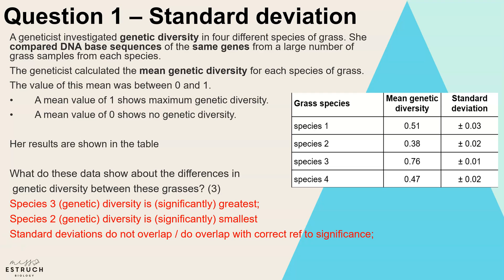So here are our answers. Species three has the greatest genetic diversity — it's closest to one. Species two is closest to zero so that is the least genetically diverse. The standard deviations do not overlap, which means they are all significantly different means. If ever you're given standard deviation you're guaranteed there are marks linked to it.